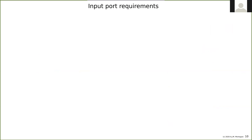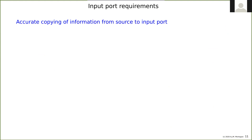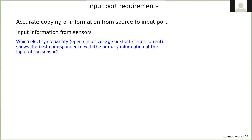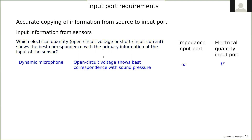Now let's look at input port requirements with some practical examples. We're talking about accurate copying of information from source to input port, specifically information coming from sensors. The question is: which electrical quantity — open-circuit voltage or short-circuit current — best corresponds to the primary information at the input of the sensor?